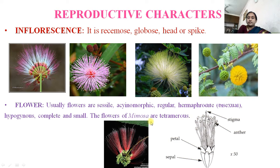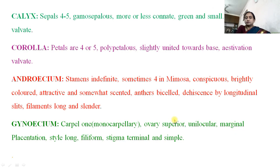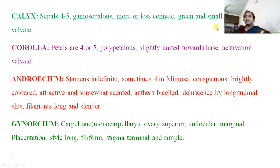The flowers consist of four whorls: calyx, corolla, androecium, and gynoecium. Calyx consists of four to five sepals, gamosepalous, more or less connate, green and small; aestivation is valvate. Corolla has four or five petals, polypetalous, slightly united towards the base, and aestivation is valvate here also.